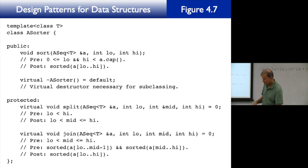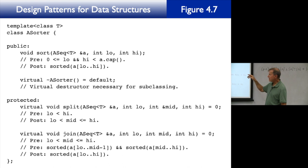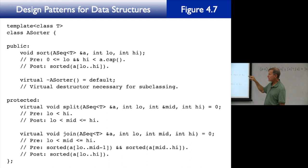Let's take a look at the precondition and postcondition of sort. The precondition of sort is: zero is less than or equal to low, and high is less than the capacity of the array, right? And what's the postcondition of sort? It's sorted — A between low and high is sorted. All the elements of A between low and high, including both, are sorted.